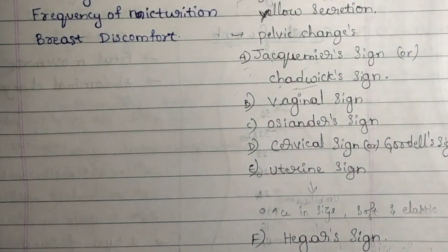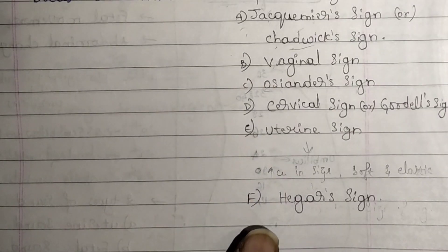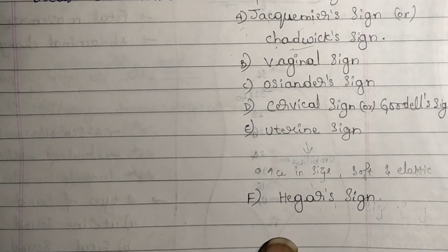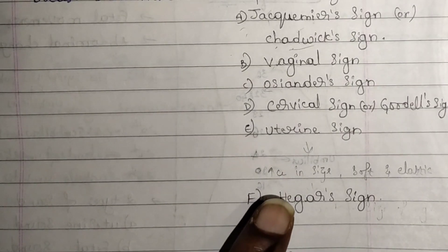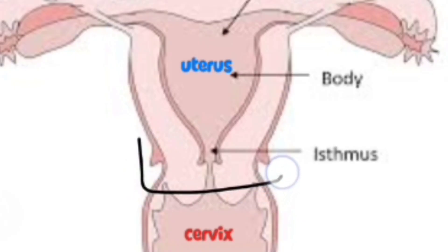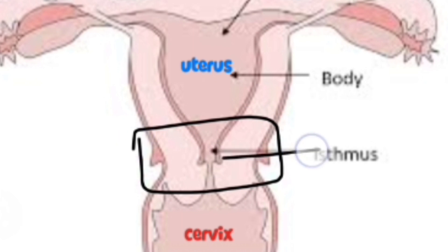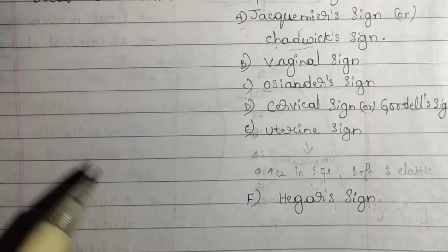Next is Hegar sign, which is the softening of the region between the cervix and the uterus. There is a connection between the cervix and the uterus, and that part becomes softer — that is Hegar sign.